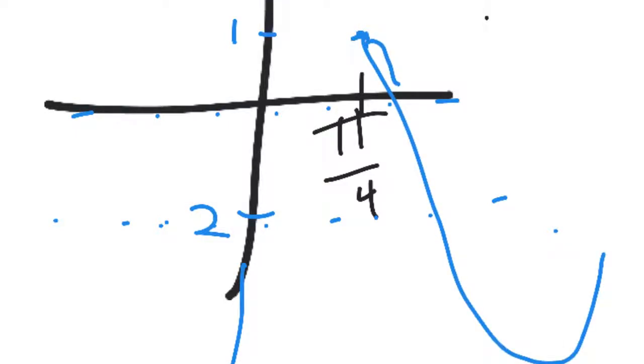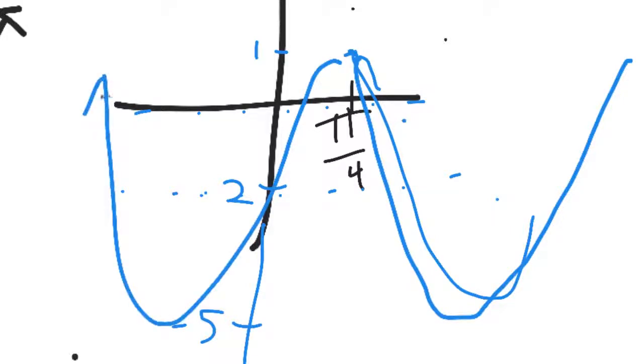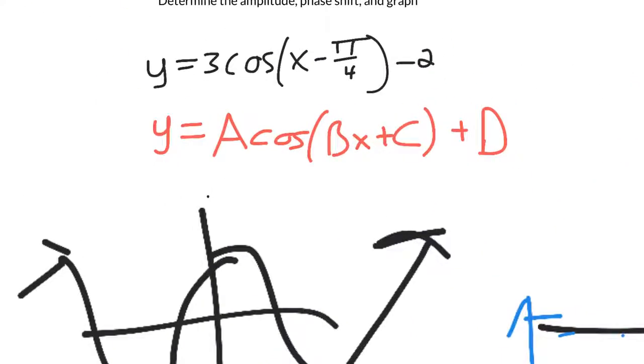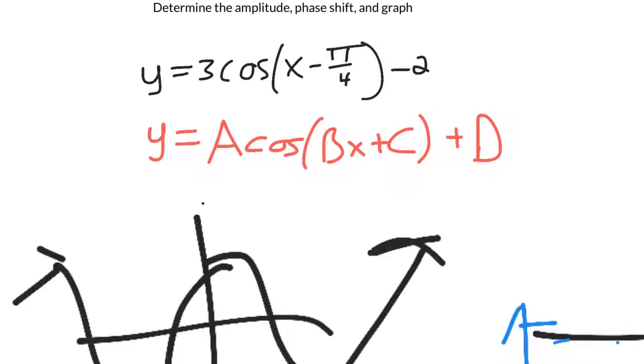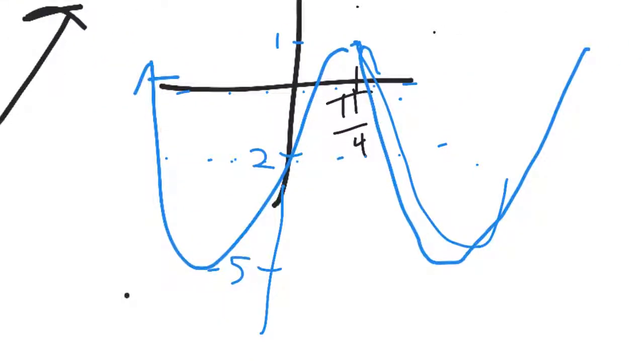And we didn't have any funny business with... Let's see. It's supposed to go down a little bit further, down to negative 5, and then repeat. We didn't have any funny business with shifting the period of the function, meaning how long it takes to repeat, so we didn't have to do anything with that. We've taken into account all three of those numbers, so that's a sketch of the graph.